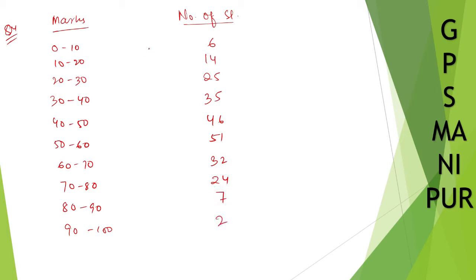Now this one we need not to do a histogram, right? We need to draw directly frequency polygon only. So let us take this one as mid value. So marks, so let us make it mid value.